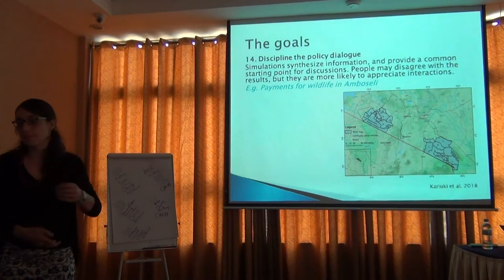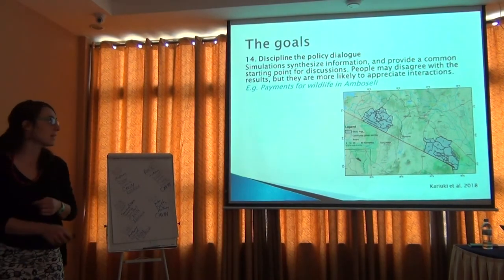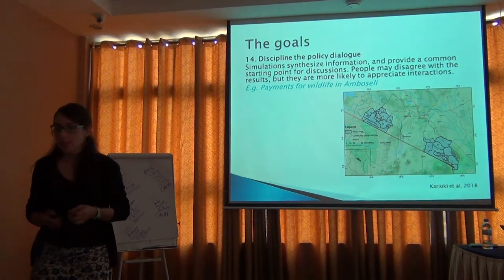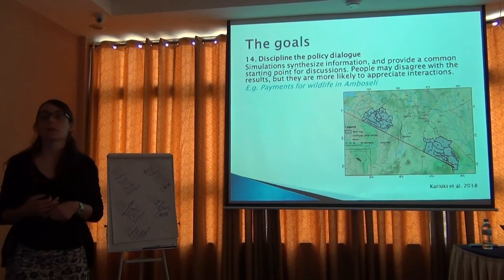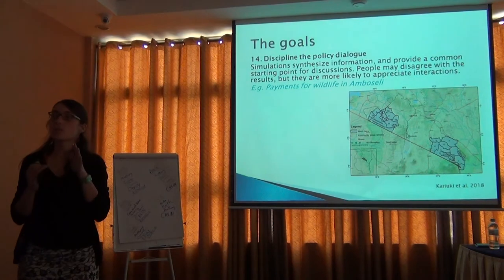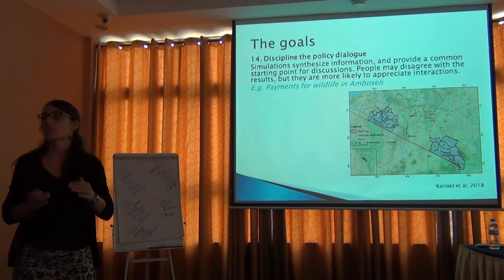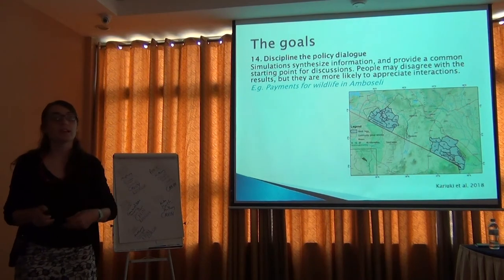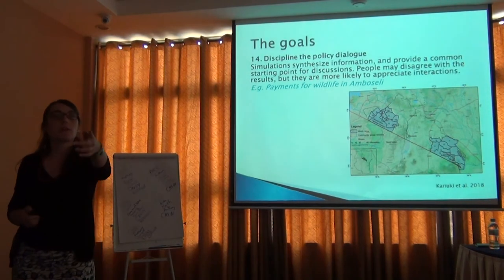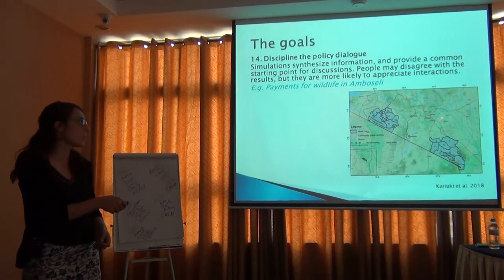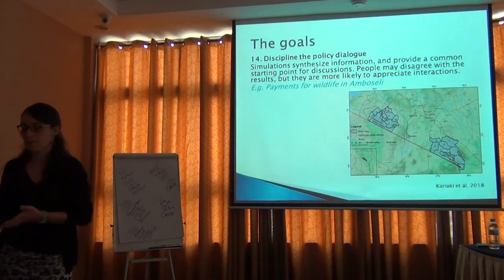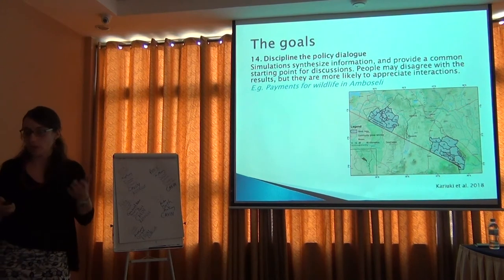Another goal is to help the policy dialogue. In this study — Kariuki et al., 2018 — they studied how much we need to pay poor pastoralists living around Amboseli and Maasai Mara for them to keep the area in ranching rather than turn it into agriculture. It's hard to experiment in real life by paying $10, then $20, and seeing how much land is cultivated. We can do modeling to inform what could be the potential solution.